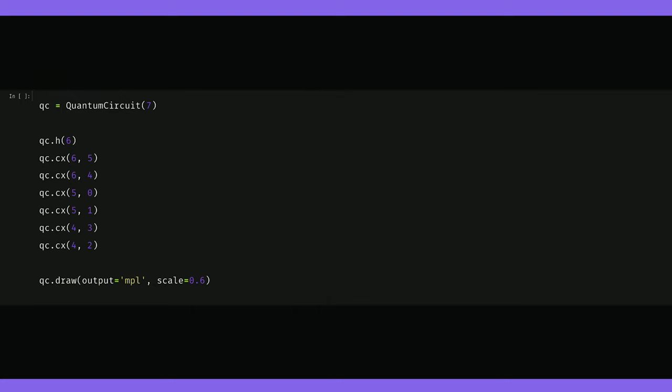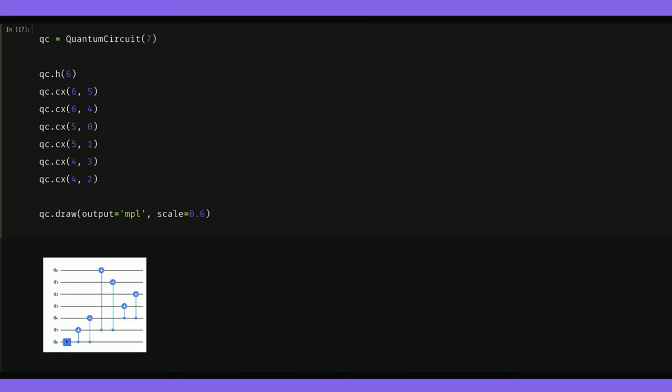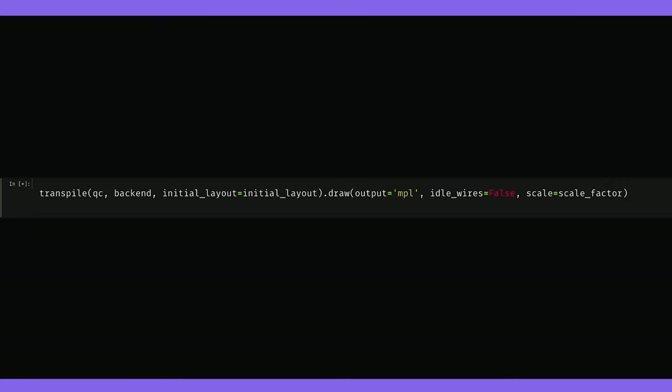So here's what we do. Let's create a seven qubit GHZ state and we can do it with this circuit that respects the connectivity of IBM Guadalupe. We can transpile that and see that we didn't incur any extra CNOTs, so we did a good job.